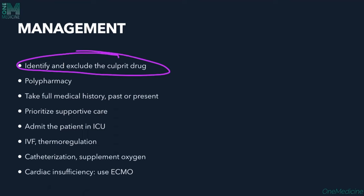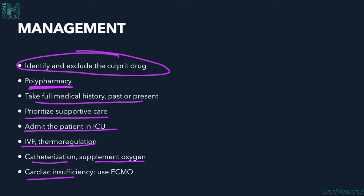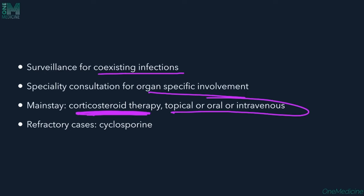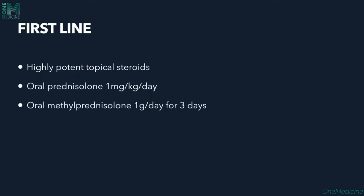Management begins with identifying and stopping the causative drug, which is the most important step — particularly challenging with polypharmacy. A full past and present medical history is essential. Supportive care in the ICU includes IV fluids, thermoregulation, catheterization, supplemental oxygen, management of cardiac insufficiency with ECMO if needed, surveillance for co-infections, and specialist consultation for specific organ involvement.